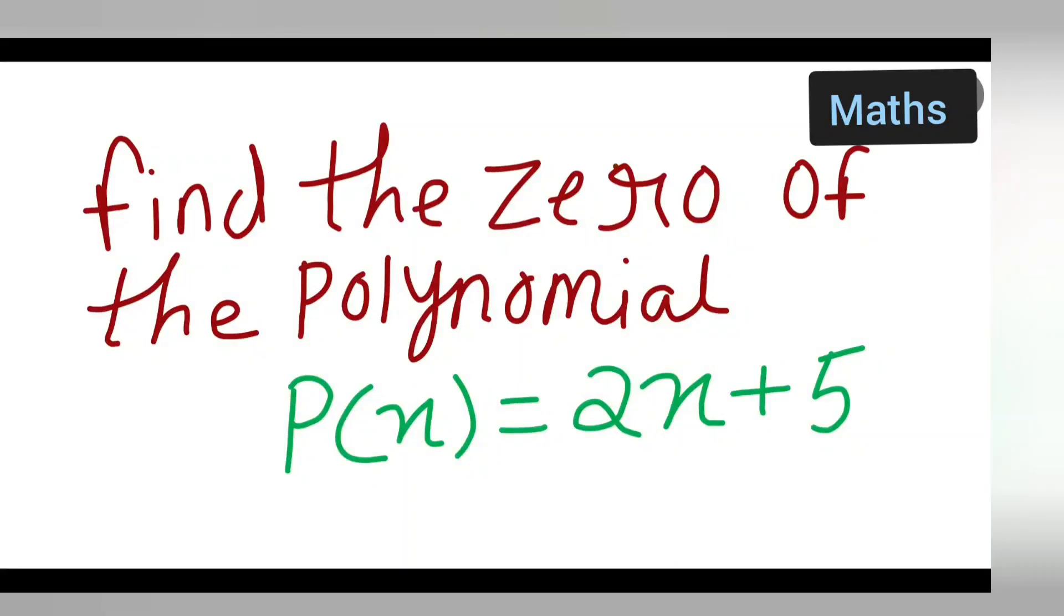Welcome to today's class of mathematics. Let's see how to find the zero of the polynomial P(x) = 2x + 5.